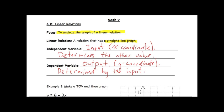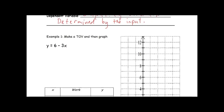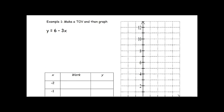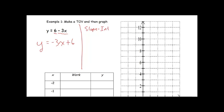We'll get a sense of what that looks like in our first example. We are going to make a table of values and then graph. We are given the equation y equals 6 minus 3x. I'm going to switch the order of these terms — writing negative 3x first and then positive 6 after that. One of the most common forms of a line that we use is the slope-intercept form of a line.